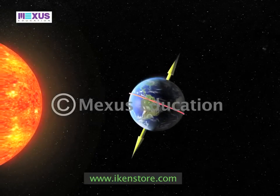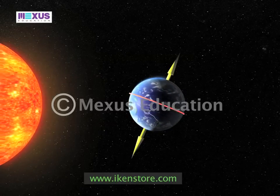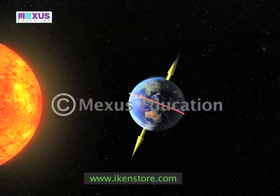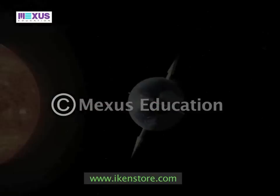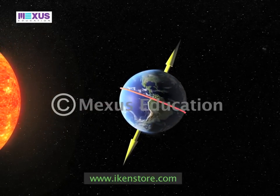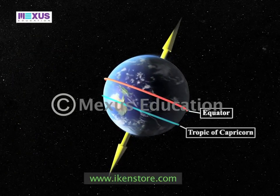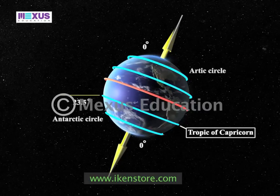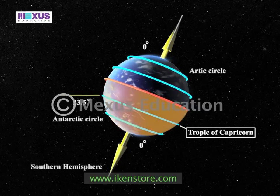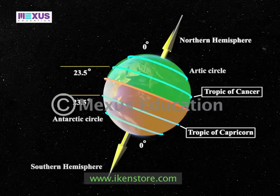Since the axis is tilted, different parts of the globe are oriented towards the sun at different times of the year, determined by the relationship between the overhead sun and the earth. Along with the axial tilt, the two other integral components in the process of seasonal change are the Tropic of Capricorn, situated at 23.5 degrees in the southern hemisphere, and the Tropic of Cancer at 23.5 degrees latitude in the northern hemisphere.